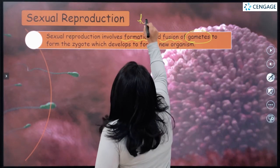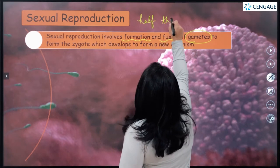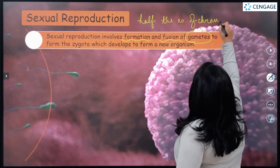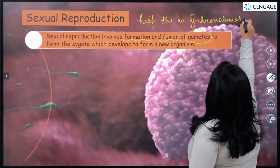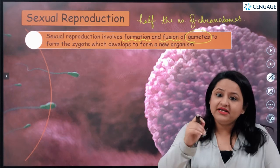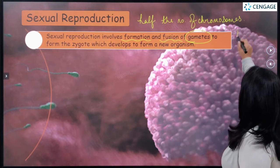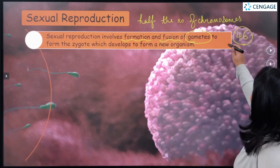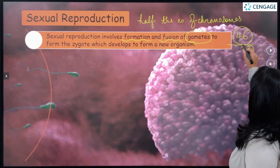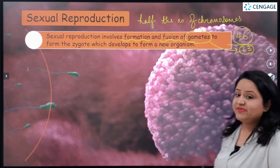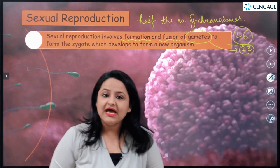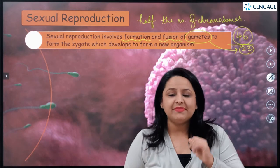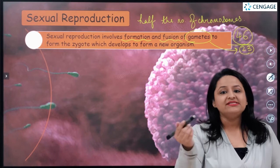Gametes are called special cells because they have half the number of chromosomes compared to all other cells of our body. Suppose each somatic cell of our body has 46 chromosomes — gametes are going to have half that number, which is 23. This is the speciality of gametes: they have half the number of chromosomes. Gametes are formed by a special type of cell division known as meiosis.